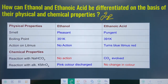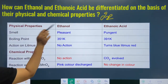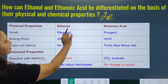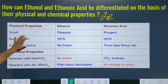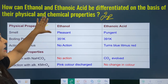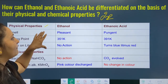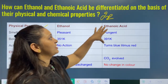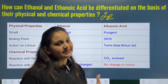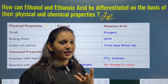First of all, we compare ethanol and ethanoic acid on the basis of physical properties. In physical properties, we talk about smell. Ethanol has a pleasant smell, while ethanoic acid has a very pungent smell.